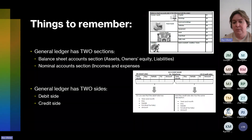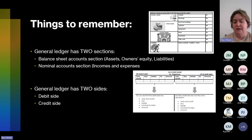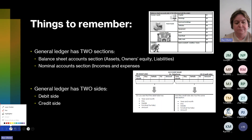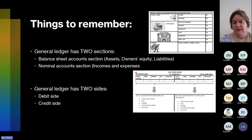You must also remember that your general ledger has two sides. You will have a debit side and a credit side, and your debit side and your credit side look exactly the same. You will have your year, your month, your day, your details, your folio, and your amount. And you must always remember that the debit must always be equal to the credit side.